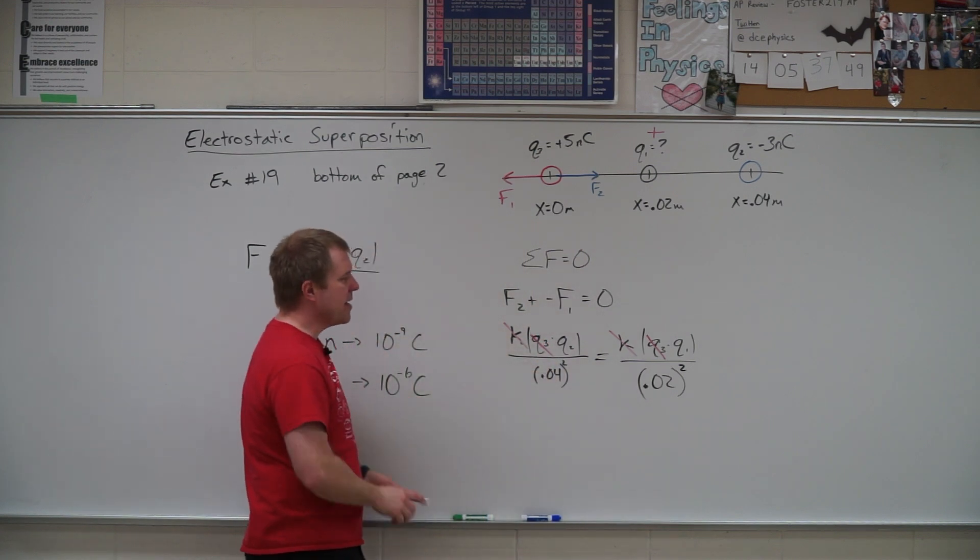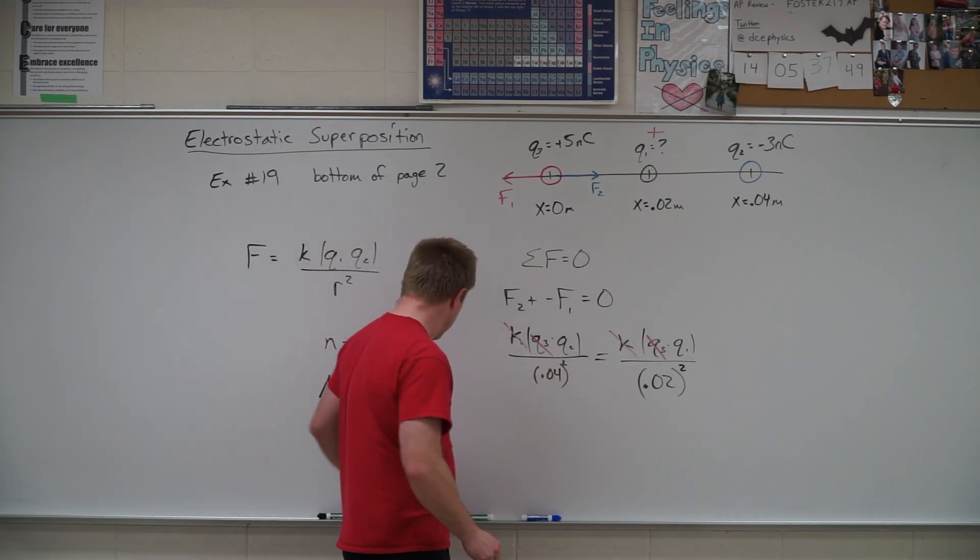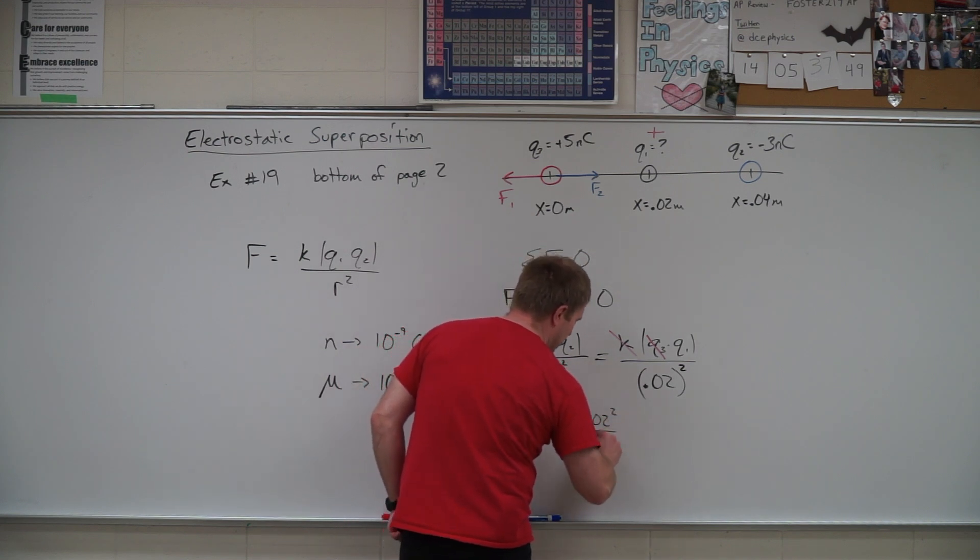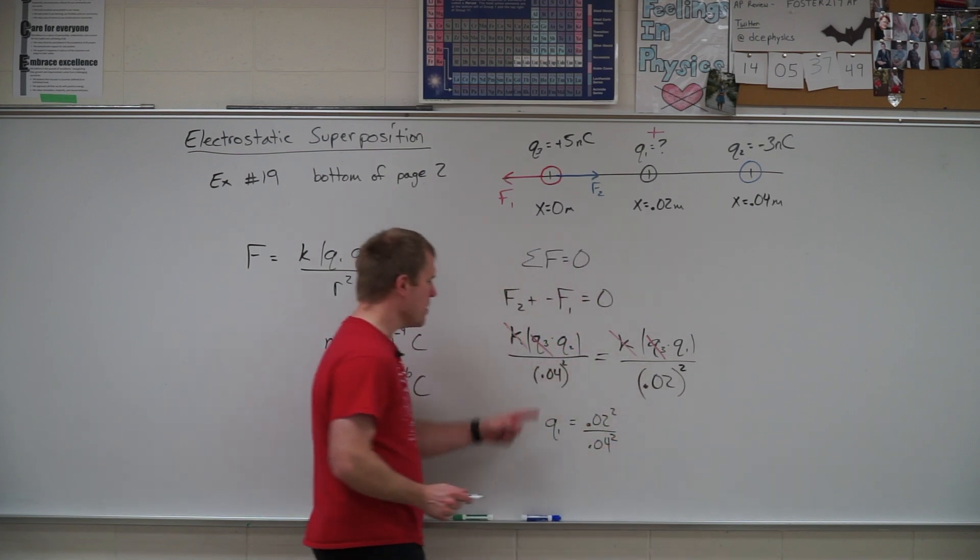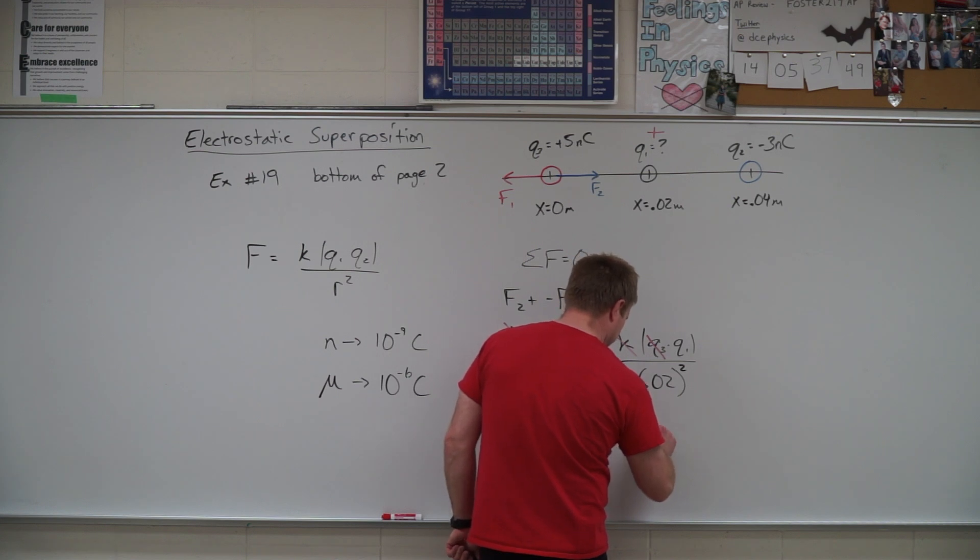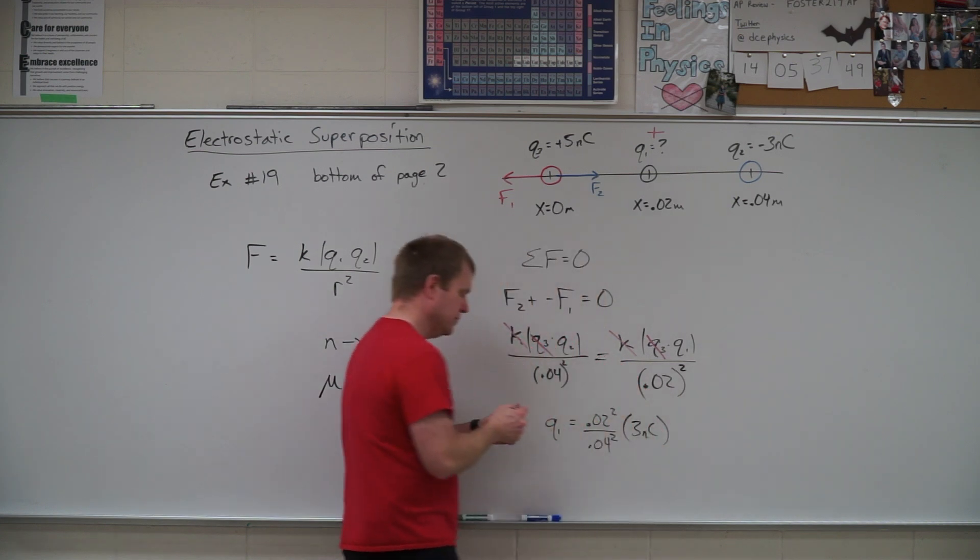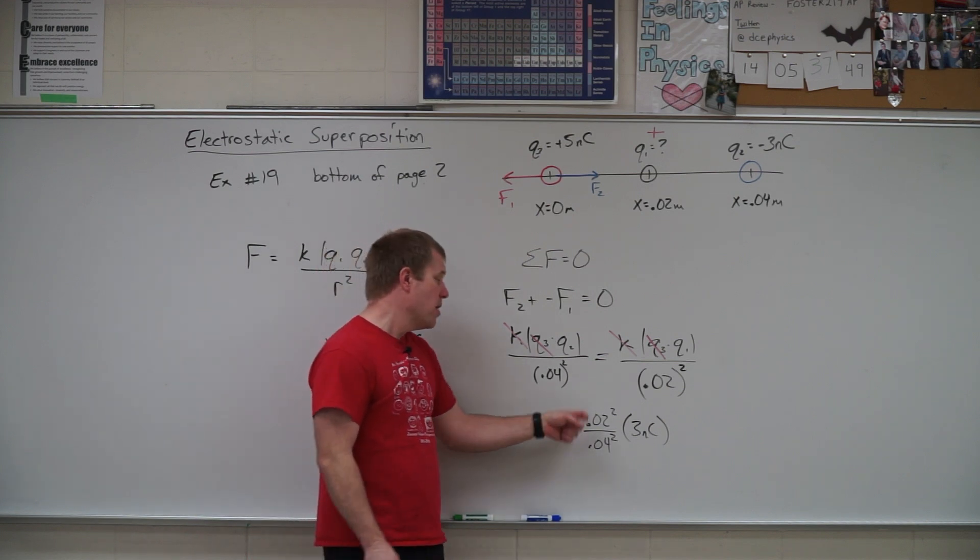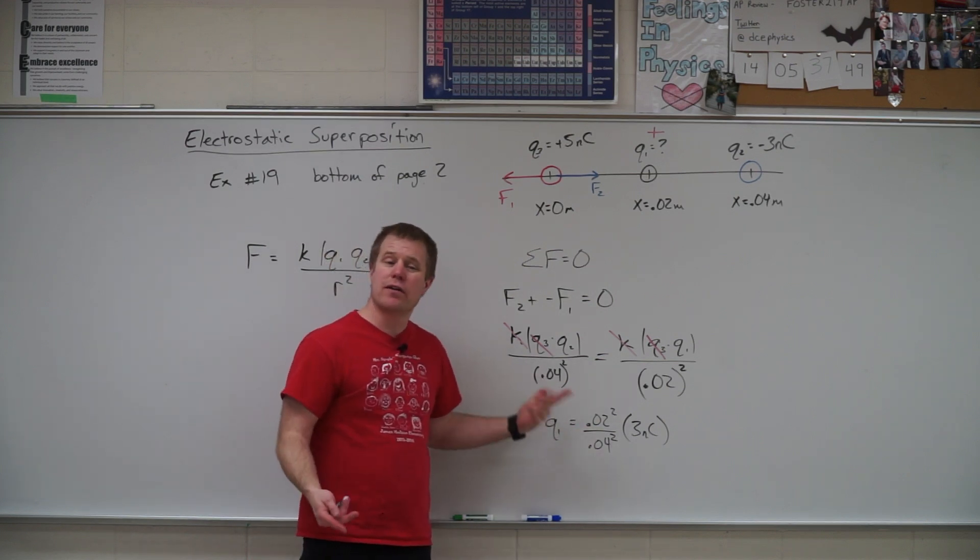And so the last step I need to do is just solve for q1. And so I end up with q1 is equal to 0.02 squared divided by 0.04 squared times q2. q2 was three nanocoulombs. And 0.02 divided by 0.04 turns out to be essentially a half, and then we square it, we get a fourth.